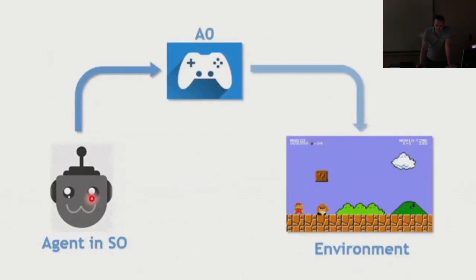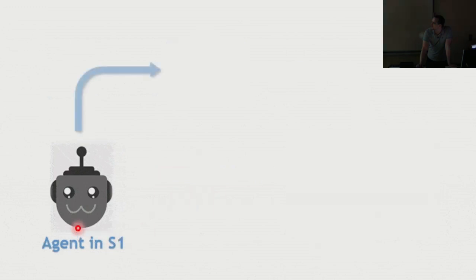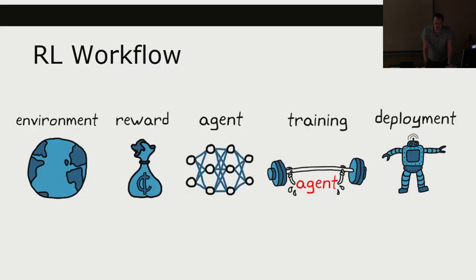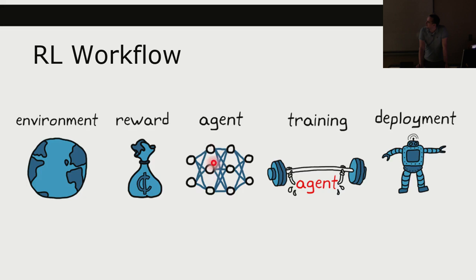In a video game, an agent takes an action that updates the environment, receives a new state and reward — for example, jumping on a Goomba gives points. The reinforcement learning workflow: you have an environment, a reward assigned to actions at particular states, and an agent that records and updates its value estimates. You could use a neural network to store those values, but in this course we'll just use numbers that we update over time. Then you do a training phase and eventually deploy the learned model.